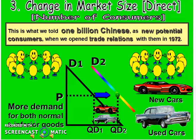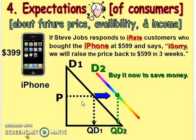A decrease in population would negatively affect demand, shifting the demand curve backward. Regarding expectations about future prices — for example, if you have information that the price of gasoline will be higher tomorrow, you would buy more gasoline today rather than tomorrow, so today's demand curve shifts rightward.